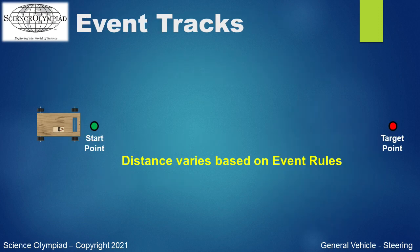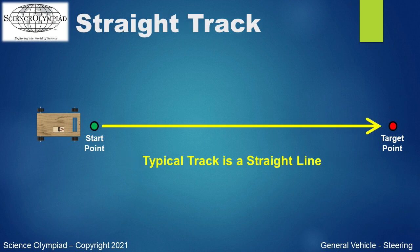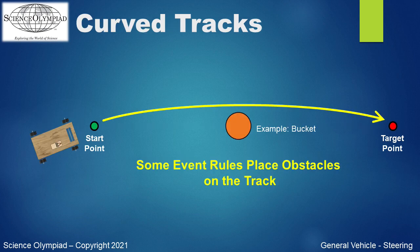Different vehicle event rules have different track designs. A typical vehicle track will determine a start point and a target point. Some rules require the vehicle to travel in a straight line. The rules may place an obstacle like a bucket on the track, requiring the vehicle's path to curve around the obstacle.